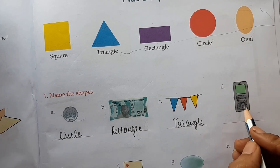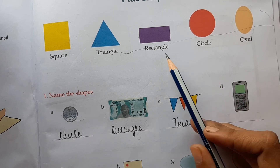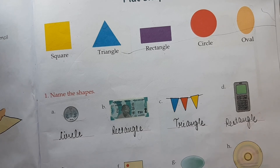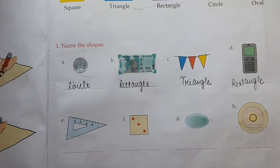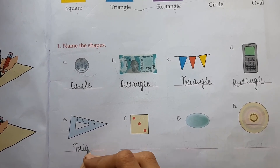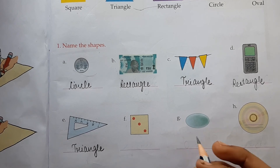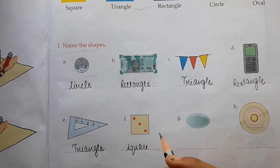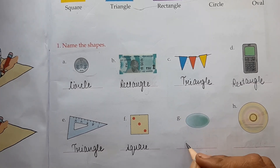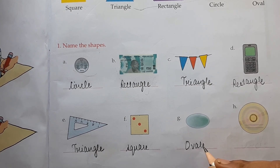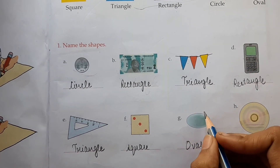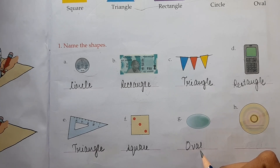Our next shape is this one — this is the shape of a rectangle. And the next shape has all four sides equal — this side, this, this, and this — all four sides are equal, so this is the shape of a square. And the next one is the shape of an oval, just like the egg shape.